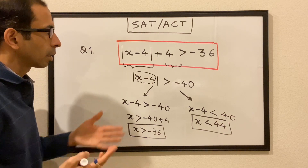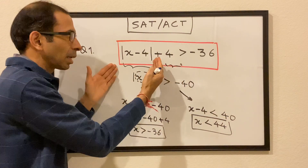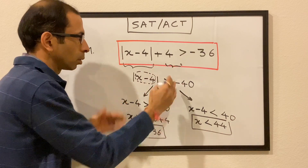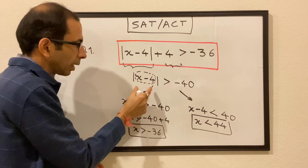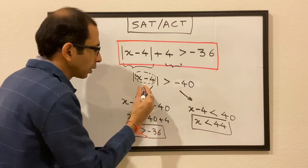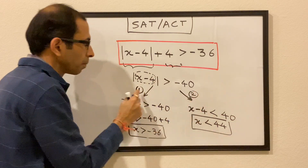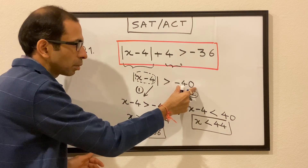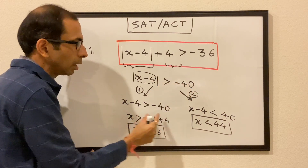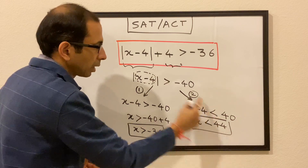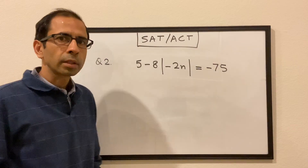Just to reiterate: the first step is to move all other terms to the right side except the absolute value term. We moved 4 and got minus 40, then entered two scenarios. In the first scenario, keep the same signs of the number and the inequality. In the second scenario, change both signs, then solve. Next question.